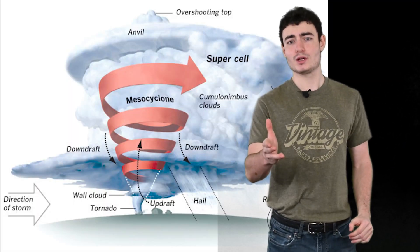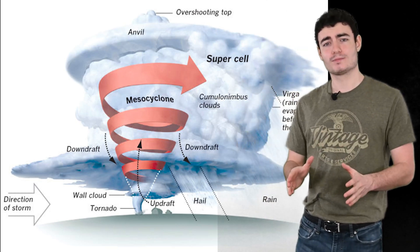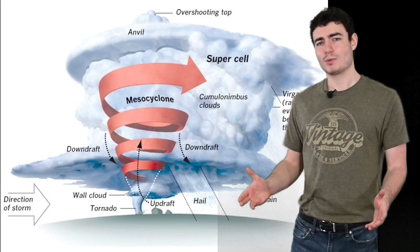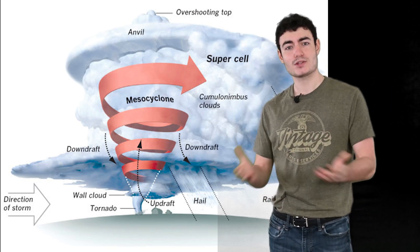Now tornadoes form in big special thunderstorms called supercells. But what exactly is a supercell? They're pretty rare and they're also pretty violent. But they create these big rotating persistent updrafts called mesocycles.